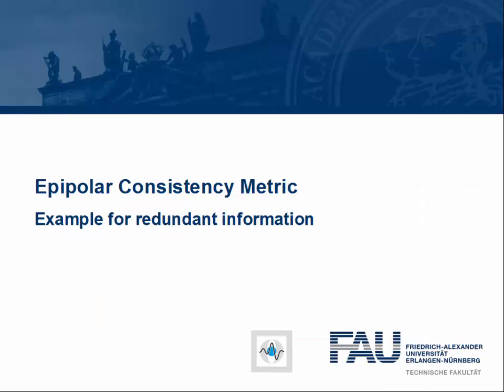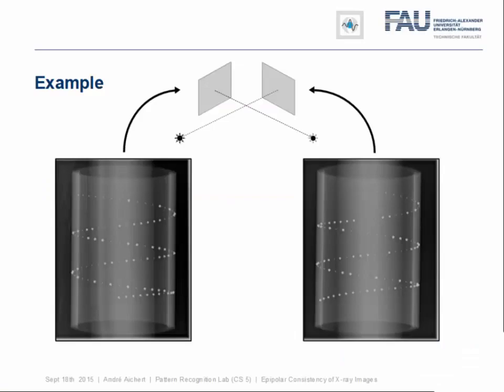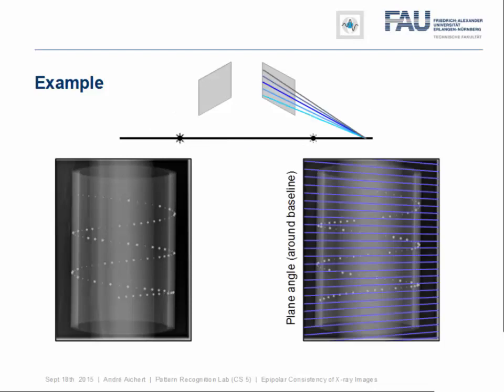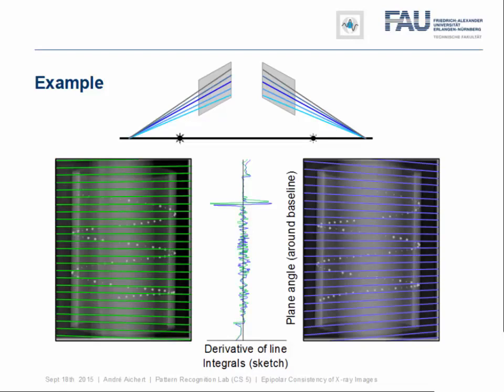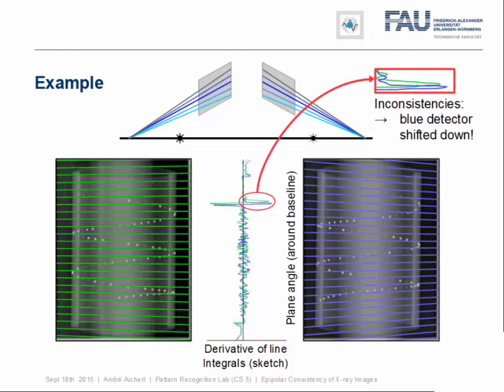We will now apply what we have observed to two sets of example images. The first is a calibration phantom, which is a plastic cylinder with metal beads embedded into it. We take two images at about a 90 degree angle. We can then extract the epipolar geometry, get the baseline, and get the epipolar lines in the first image. We then integrate in the direction of the epipolar lines and take the derivative in the orthogonal direction. We get the following signal. We can then do the same thing for the other view. We get the green signal. You can see that the signals are correlating well. However, if you look closely, there is some inconsistency between the two. In fact, we could improve consistency by shifting the blue detector up just a little bit.